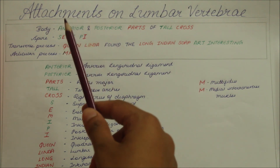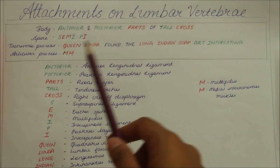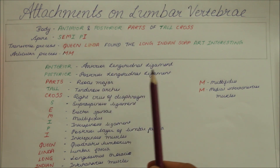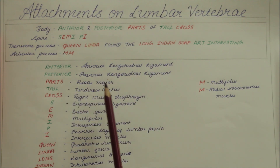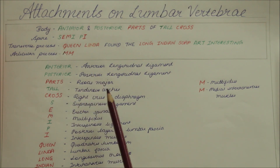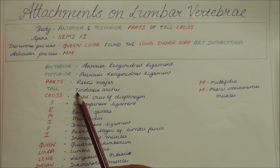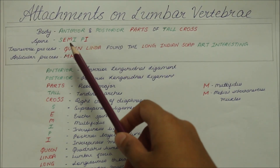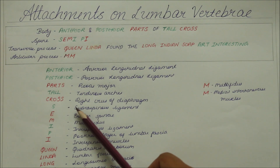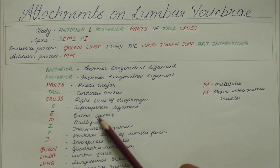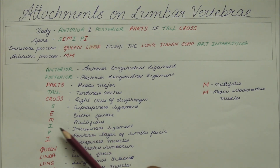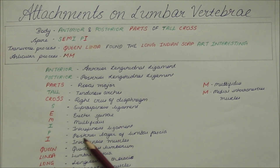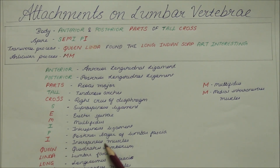For the body mnemonic 'Anterior and Posterior Parts of Tall Cross': Anterior = anterior longitudinal ligament, Posterior = posterior longitudinal ligament, Path = origin of psoas major, Tall = attachment of tendinous arches, Cross = origin of the right crus of the diaphragm. For the spine mnemonic 'Semi-Pie': S = supraspinous ligament, E = erector spinae origin, M = multifidus origin, I = interspinous ligament, P = posterior layer of lumbar fascia, I = interspinous muscles origin.